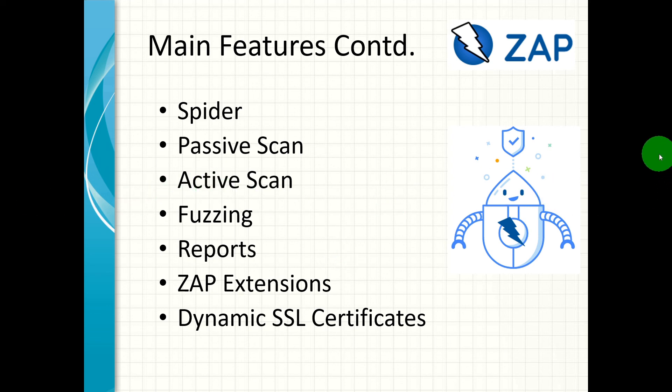Finally, it is important to note that not all types of issues can be found using automated tools — be it ZAP, Burp Suite, or any other security testing tool — and you also need to perform manual security tests to highlight any additional issues. A penetration tester would use a wide variety of tools to pen test an application, and ZAP is certainly one of those tools which is free and rich in functionality. Thanks for watching!